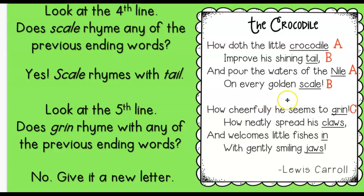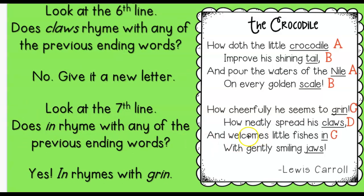Tail and scale — if you said B, you're right, scale does rhyme with tail. Let's go into the second stanza. Last word is grin. Does grin rhyme with crocodile, tail, Nile, or scale? Nope. So it's going to be C. Let's think about claws. Does claws rhyme with anything so far — crocodile, tail, Nile, scale, or grin? No, so it would be D. Next line: in. Does in rhyme with grin? Yes it does. So that's why this one is going to be C.